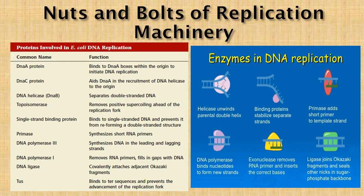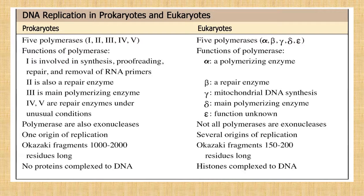Primase synthesizes short RNA fragments on which the DNA polymerases can work. Now let us conclude by noting the basic differences between prokaryotic and eukaryotic replication. In prokaryotes we have 5 polymerases: 1, 2, 3, 4, and 5, while in eukaryotes we have alpha, beta, gamma, delta, and eta.